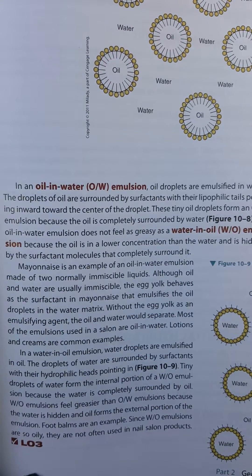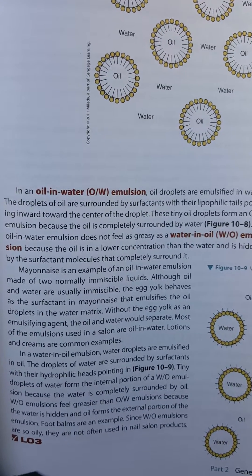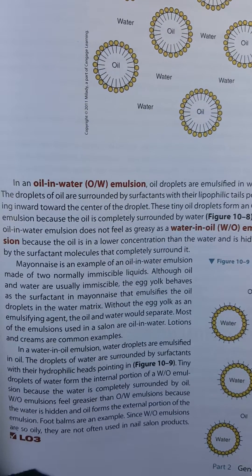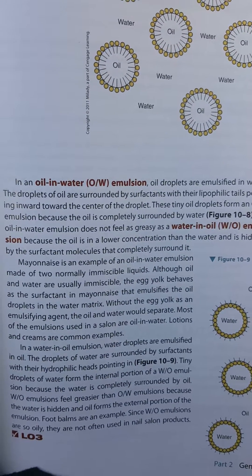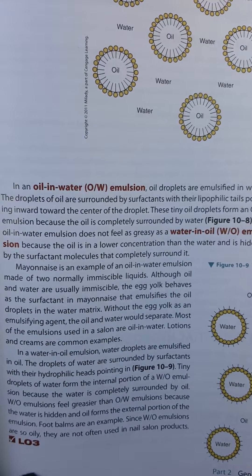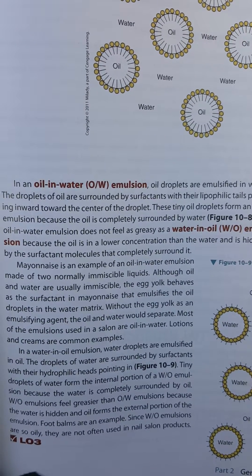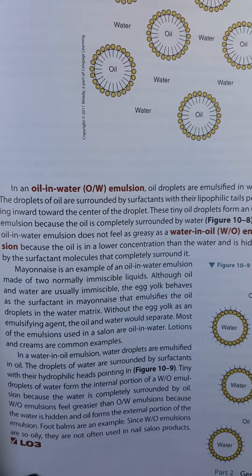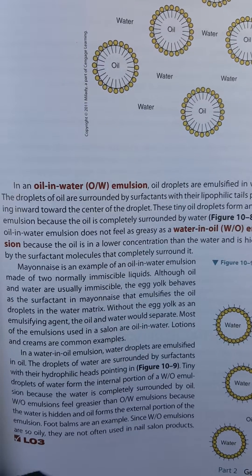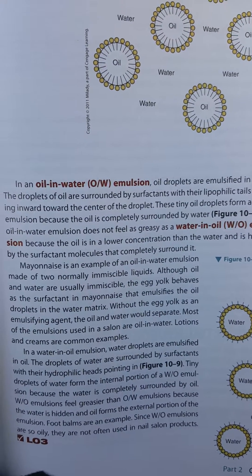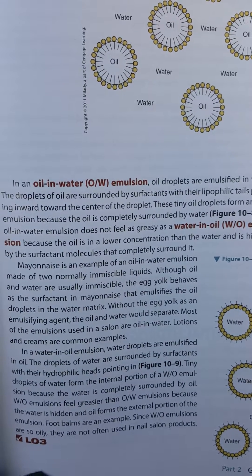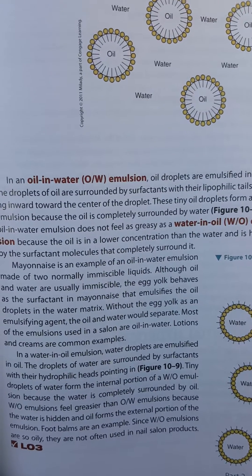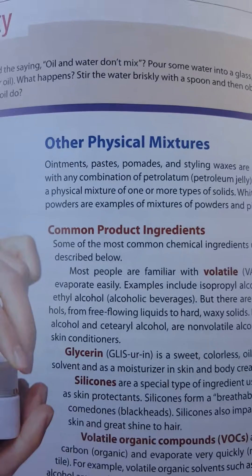In a water-in-oil emulsion, water droplets are emulsified in the oil. The droplets of water are surrounded by surfactants with their hydrophilic heads pointing inward. Tiny droplets of water form the internal portion of the water-in-oil emulsion because the water is completely surrounded by oil. Water-in-oil emulsions feel greasier than oil-in-water emulsions because the water is hidden and oil forms the external portion. Foot balms are an example; since water-in-oil emulsions are so oily, they are not often used in nail salon products.